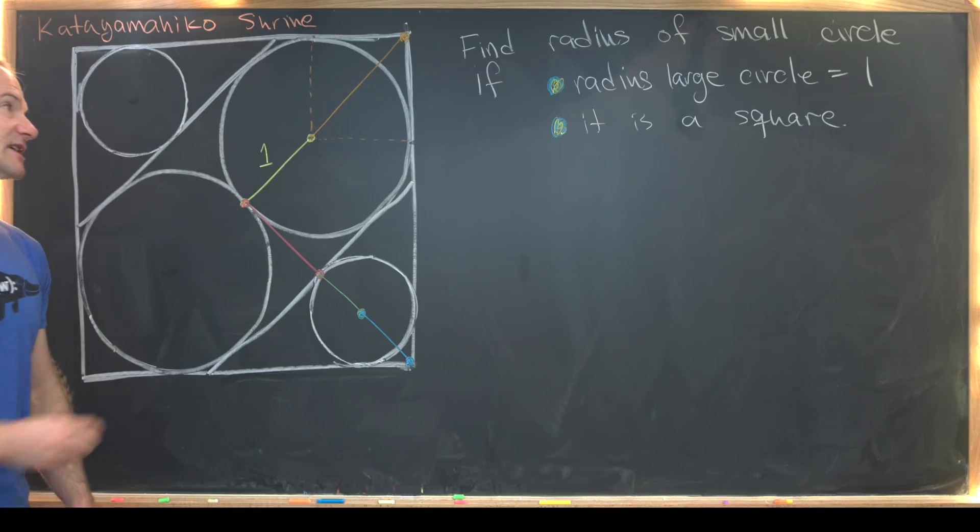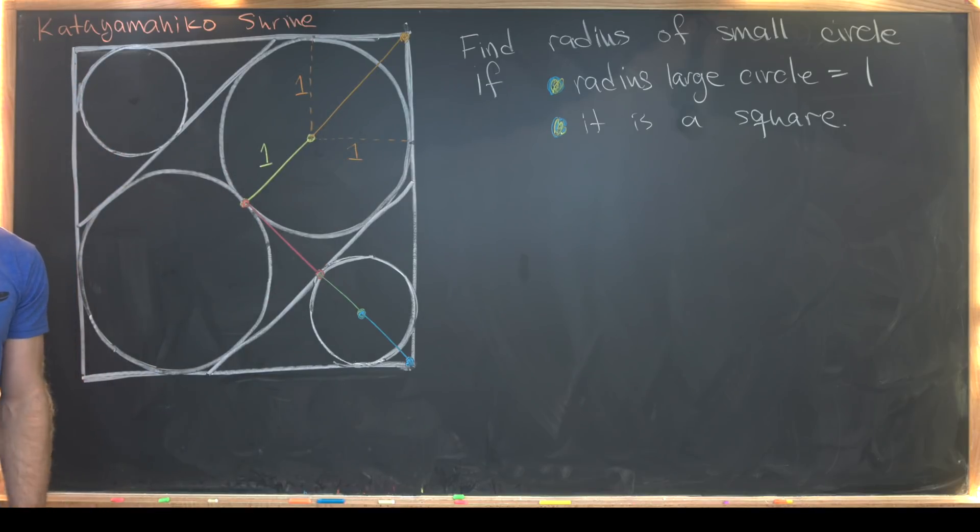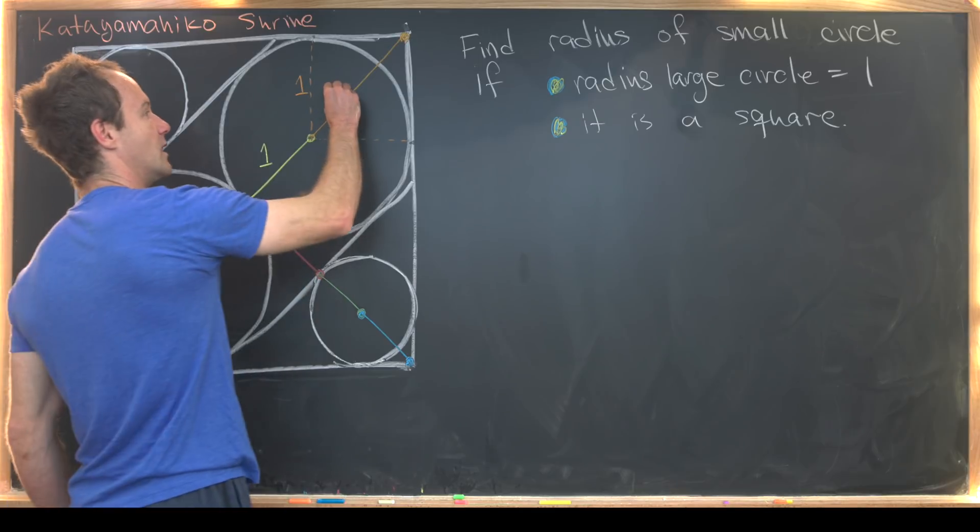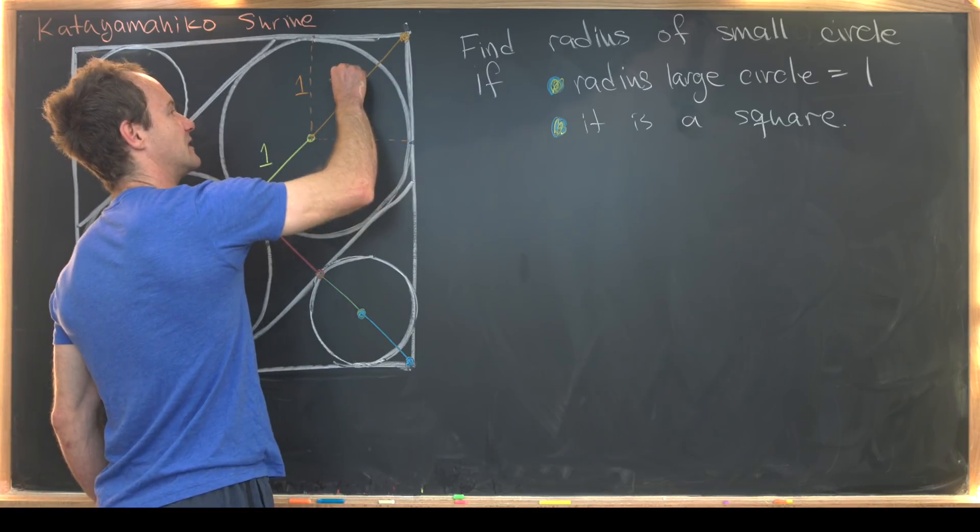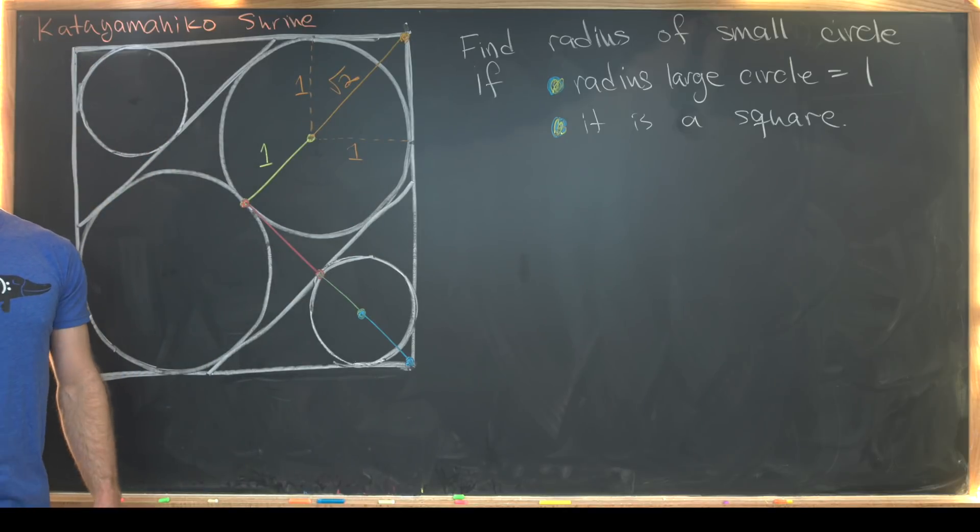And that's a square with side length 1. Again, we know that because the radius of the circle is 1. But if that's side length 1, then just by the Pythagorean theorem we know that this has diagonal of the square root of 2.